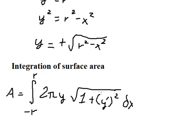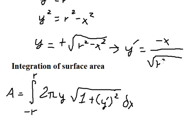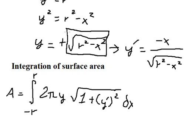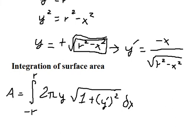Next, we need to find the first derivative of y. We have negative x over the square root of R squared minus x squared. When we compute this first derivative, we have 1 over 2 times the square root of R squared minus x squared, multiplied by the derivative of R squared minus x squared, which gives negative 2x.